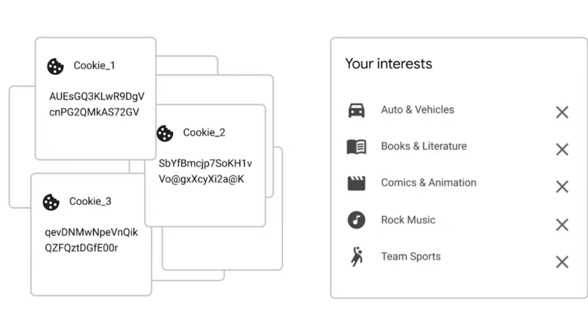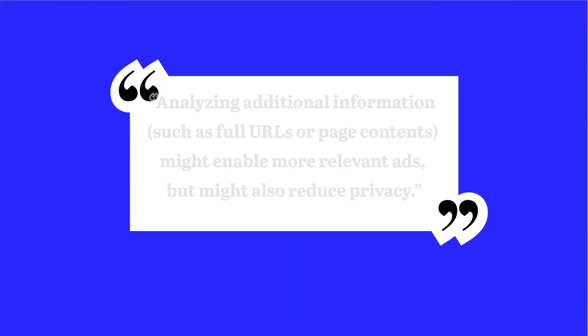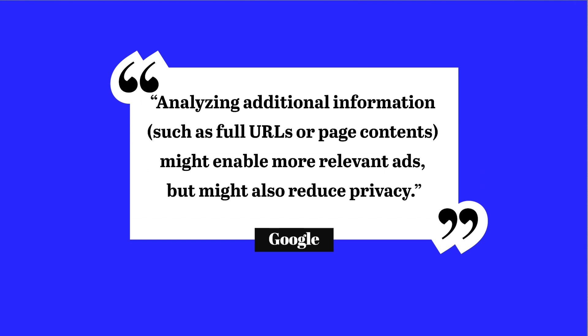So in a nutshell, instead of cookies operating in the background, as they would on the left here, users will have some sense of control. They will see a list of their own interests on the right. You might think the selection of topics is pretty broad and it is, but Google says analyzing additional information such as full URLs or page contents might enable more relevant ads, but would also reduce privacy. So there's that trade-off again.